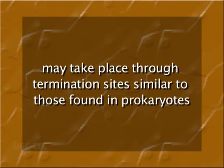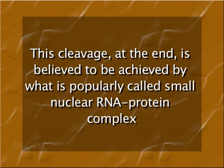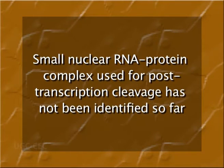In eukaryotes, the actual termination of RNA polymerase II activity may take place through termination sites similar to those found in prokaryotes, but these termination sites are believed to be present away from the site of the 3' end of mRNA. The 3' end of mRNA will therefore be generated due to post-transcriptional cleavage, believed to be achieved by a small nuclear RNA-protein complex (snRNP). This snRNP used for post-transcriptional cleavage has not been identified so far, but is believed to be different from the U1 snRNP involved in intron splicing in split genes.